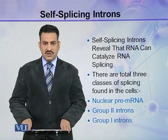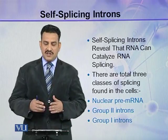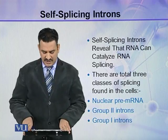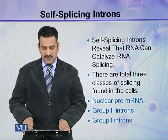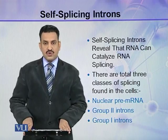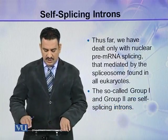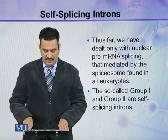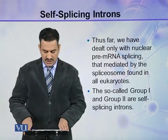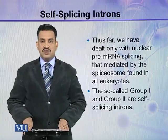Self-splicing introns reveal that RNA can catalyze RNA splicing. There are three total classes of splicing found in cells: nuclear pre-mRNA, group 2 introns, and group 1 introns. Thus far, we have dealt only with nuclear pre-mRNA splicing that is mediated by the spliceosome, found in all eukaryotes.